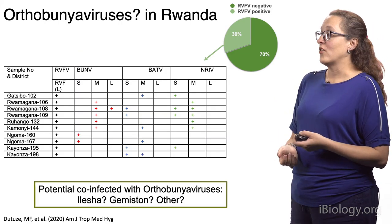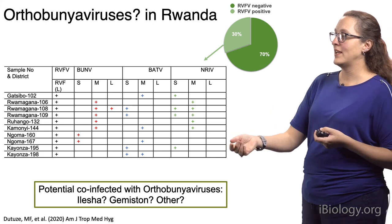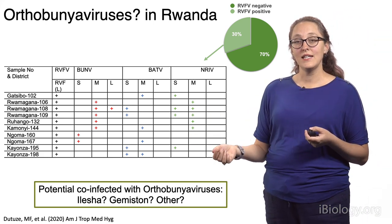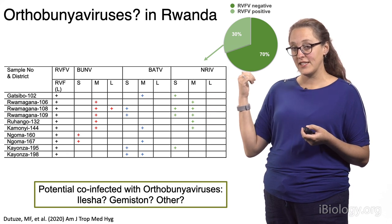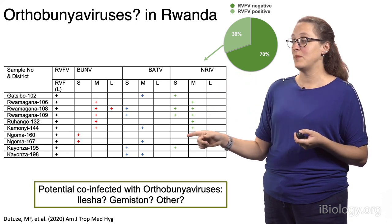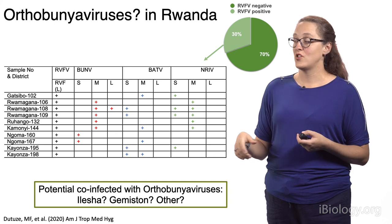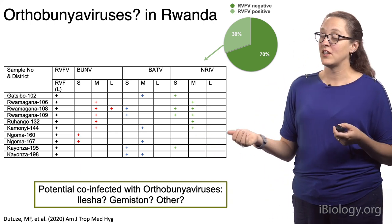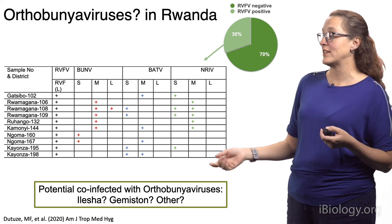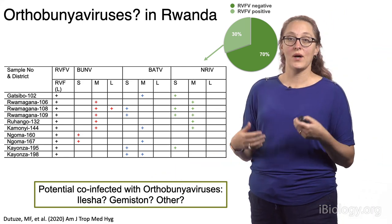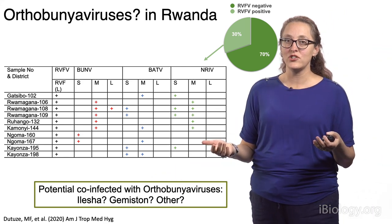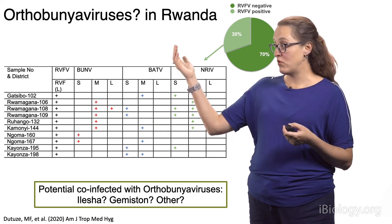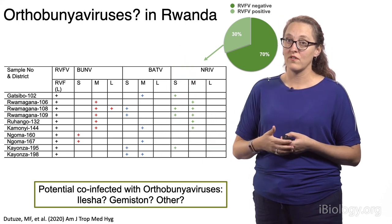We also found some combinations of gene segments in ten cows that were infected with Rift Valley Fever but seemed to be co-infected with something else. We weren't able to determine exactly what, but there are other orthobunyaviruses — like Germiston, like Nkolbisson, possibly others — that are circulating in the region. Perhaps they are co-infected with Rift Valley Fever and these other orthobunyaviruses.